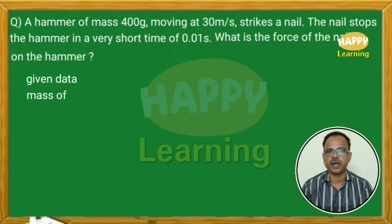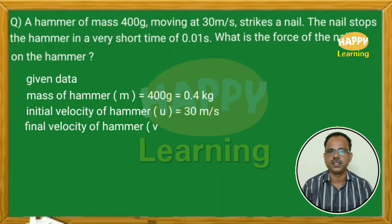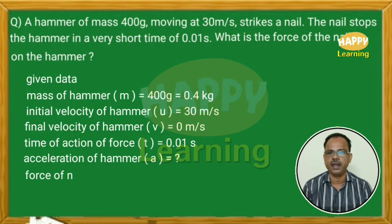Given data: Mass of hammer M is equal to 400 grams, on conversion into kilograms it is 0.4 kg. Initial velocity of the hammer U is equal to 30 meters per second. Final velocity V is equal to 0 meters per second. Time of action of force T is equal to 0.01 second. We need to find acceleration A and force F of the nail on the hammer.